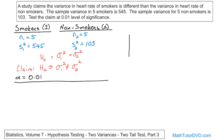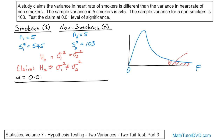We draw a little sketch of the F distribution. Here's the F distribution, and here is zero. Now we have a two-tailed test — you always look at the alternate hypothesis, which has a not-equal sign, and that means two tails. The tail to the right is going to have an area of alpha over two, and there's also going to be a tail to the left with the other half, alpha over two.